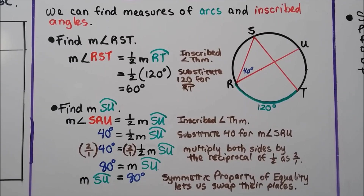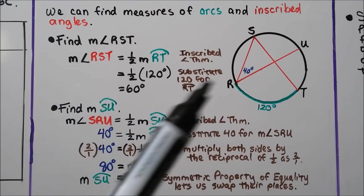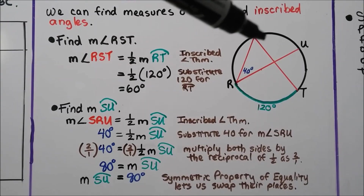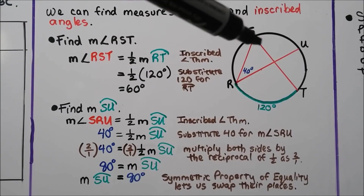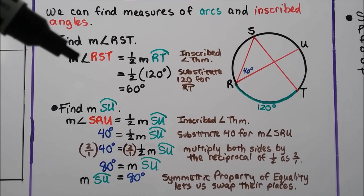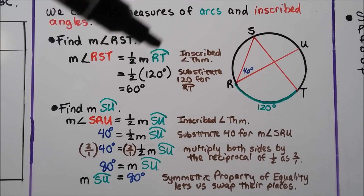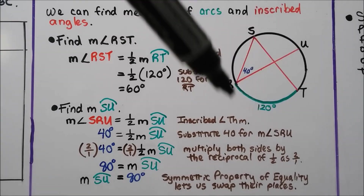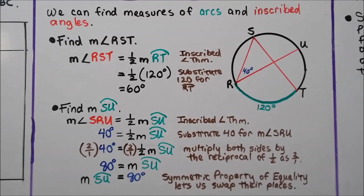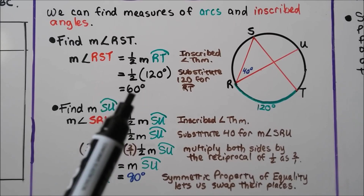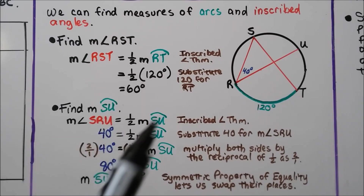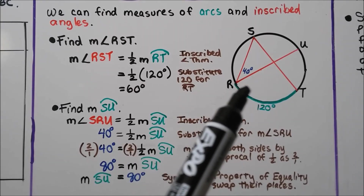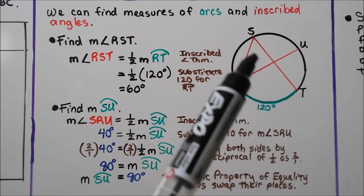We can find measures of arcs and inscribed angles. Looking at this diagram, we need to find the measure of angle RST. By the inscribed angle theorem, the measure of angle RST equals half the measure of arc RT. Arc RT is given as 120 degrees, so half of 120 is 60. The measure of angle RST is 60 degrees.